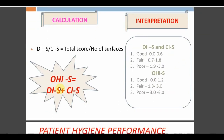OHI-S formula: OHI-S = DI-S + CI-S. Each component's total score divided by number of surfaces (6). Maximum: 6 surfaces × score 3 = 18; divided by 6 = 3. So DI-S or CI-S ranges from 0 to 3, and OHI-S ranges from 0 to 6. This differs from OHI where both buccal and lingual scores are used for the same tooth; in OHI-S only one surface per tooth is recorded — buccal for most, lingual for 36 and 46.